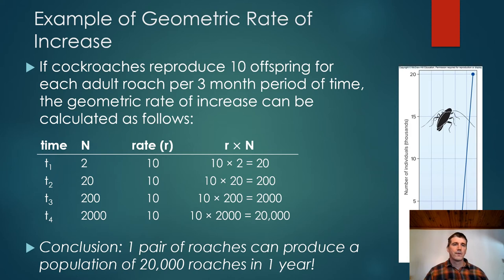Another example of this would be, we use the term geometric sometimes to the same way that we use exponential. This is a population that's growing at a set rate over a long period of time at a constant rate. So cockroaches would be an example of this. If cockroaches produce 10 offspring for each adult cockroach for every three months, then you can have two cockroaches that three months later produces 20 cockroaches. Those 20 cockroaches three months later produce 200 cockroaches. Those three months later produce 2,000 cockroaches. So over time, those two cockroaches can produce a population of 20,000 cockroaches in one year's time.